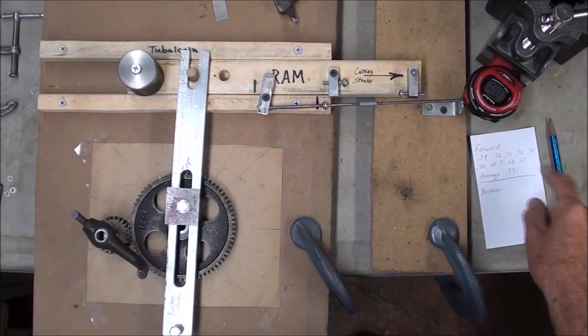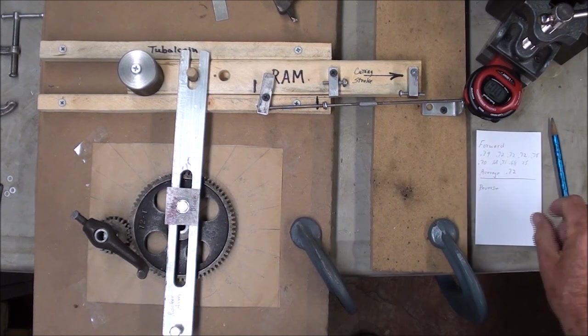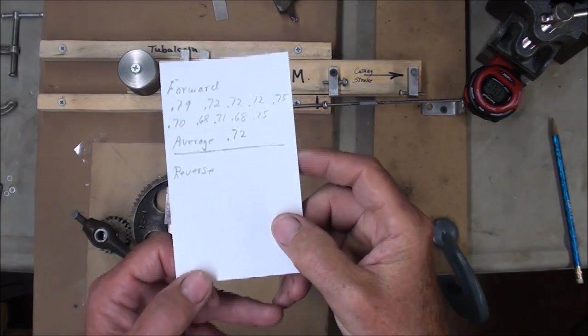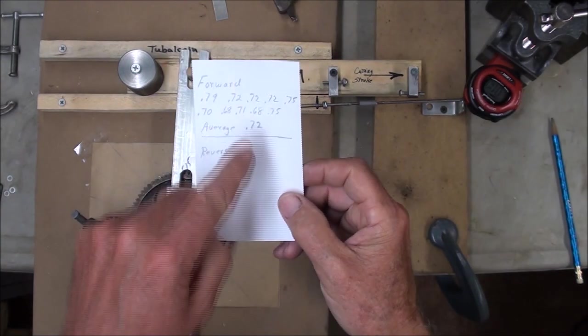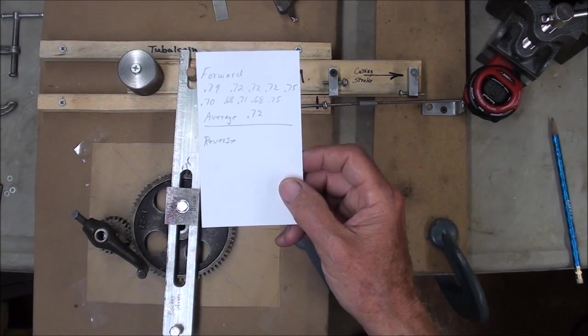I took ten readings on the forward motion, or cutting motion, and there they are. And it was an average of .72 or .72 hundredths of a second. Now I'm going to do the same thing in reverse.